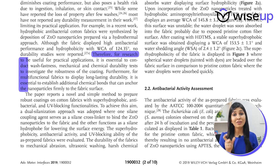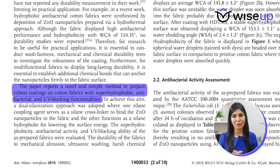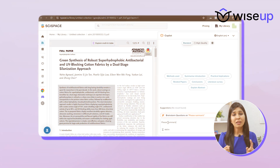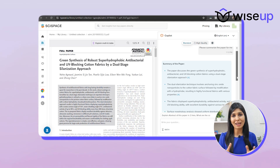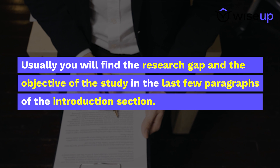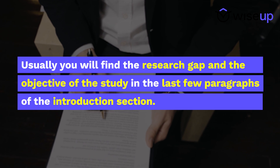While you're reading the introduction, try to identify the research gap and the objective they are working on. For seasoned researchers who don't want to go through the entire introduction, you can ask AI tools like SciSpace and ChatPDF to summarize the introduction for you. Alternatively, I recommend going to the last few paragraphs of the introduction section, because that is where you will usually find the research gap and the objective of the study.